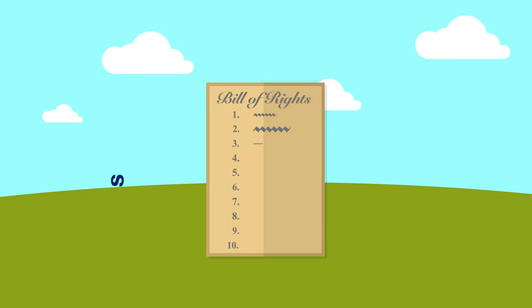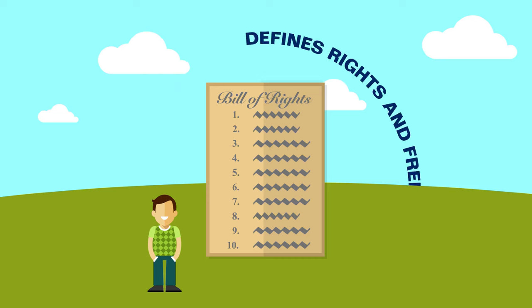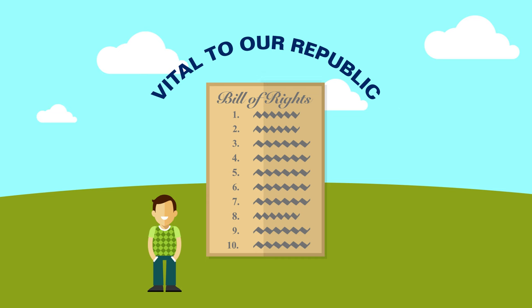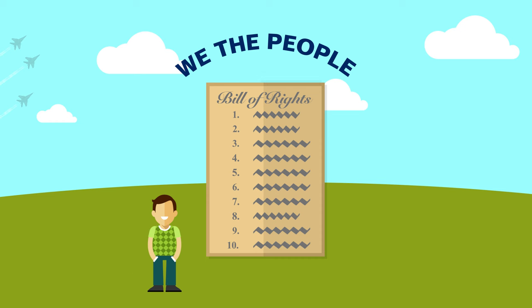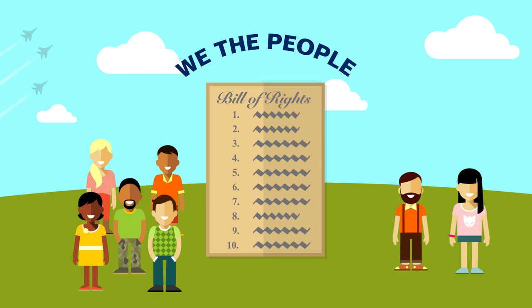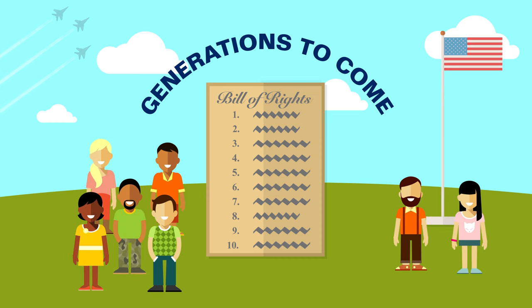Today, the Bill of Rights defines the rights and freedoms of the individual, and is vital to the Republic in which we live. It is a powerful instrument which we the people can use to defend our freedom, not only today, but for generations to come.